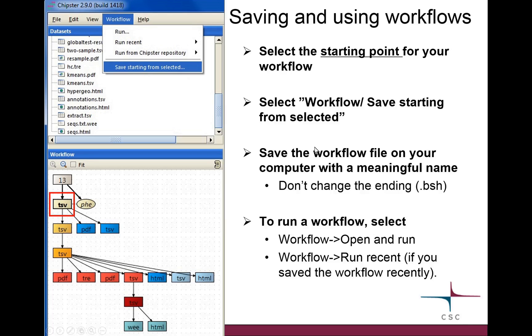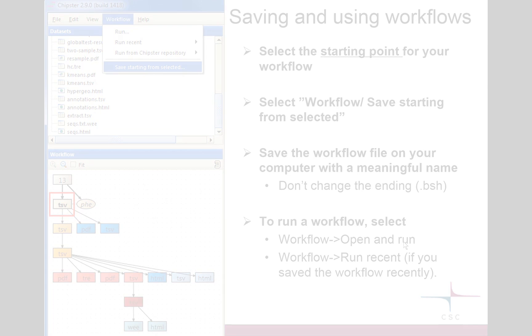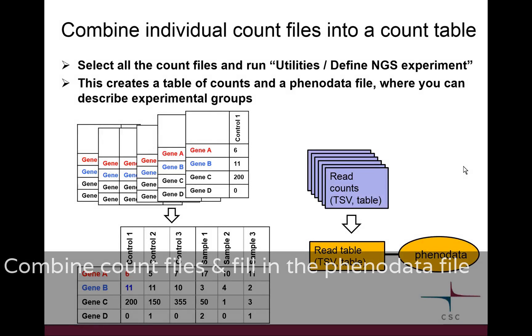Then when you come to run it, you have actually two options. Today I showed you this run recent option because we are now saving the workflow as we work. But if you get a workflow file from someone else, you would copy the file somewhere on your computer, and then you go to this run option and it allows you to navigate to that file. So it's quite simple really. In our case now we had two samples. You normally would have much more.